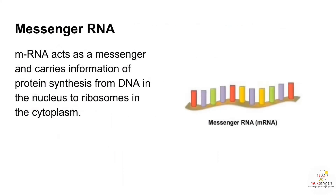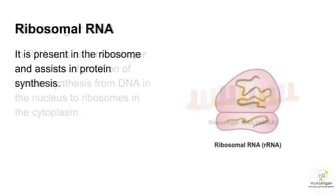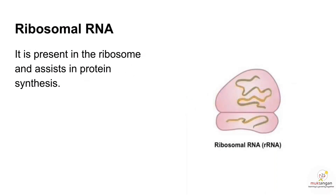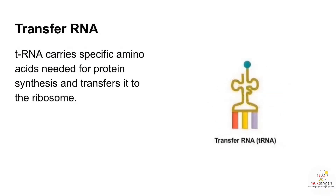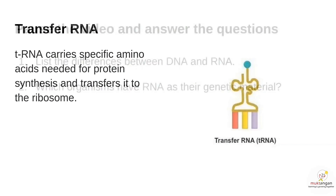Let's do a quick recap on the types of RNA. Messenger RNA acts as a messenger and carries information of protein synthesis from DNA in the nucleus to the ribosomes in the cytoplasm. rRNA is present in the ribosome and assists in protein synthesis. Transfer RNA carries the amino acids needed for protein synthesis and transfers them to the ribosome.